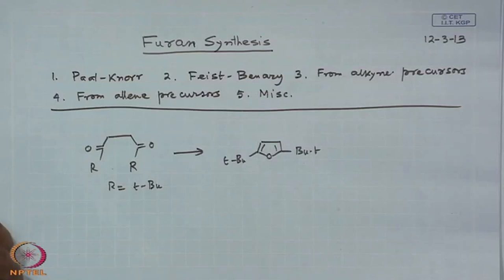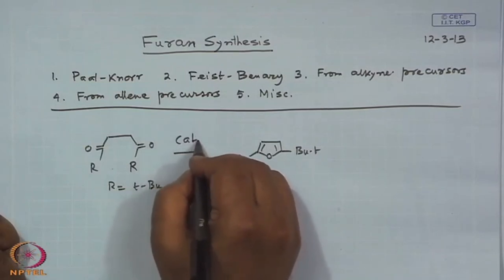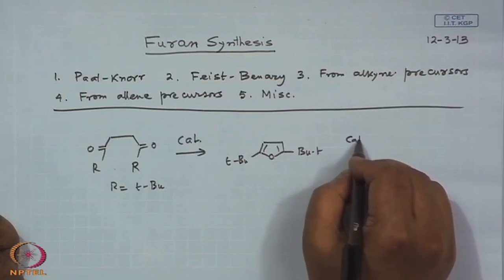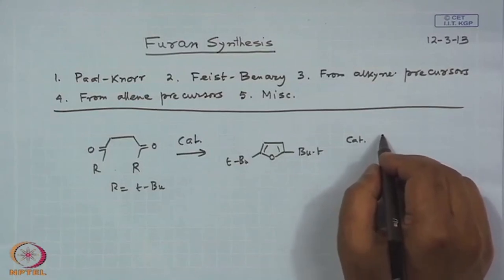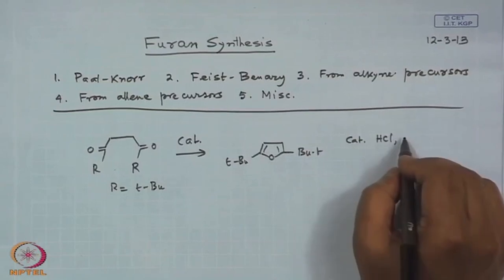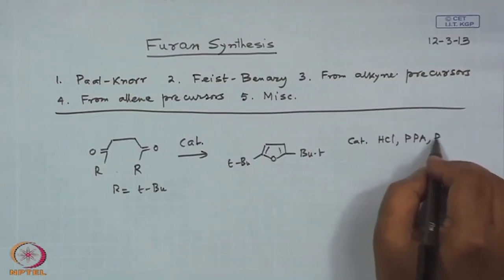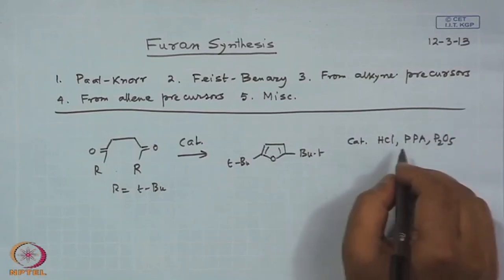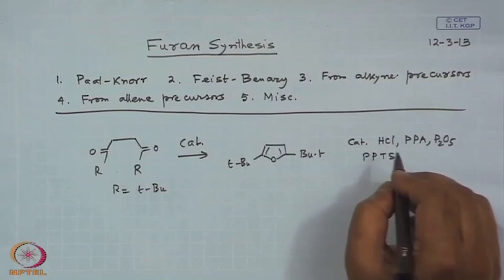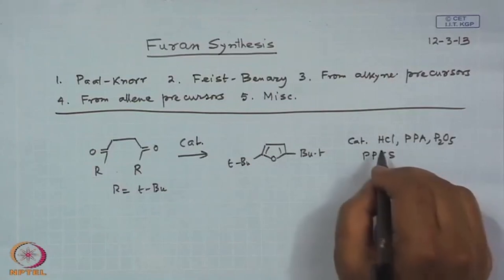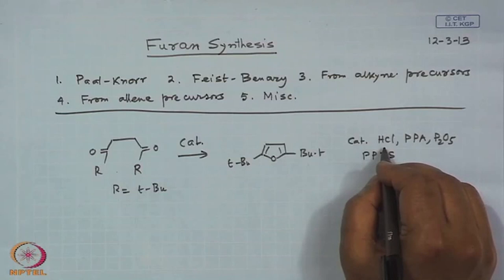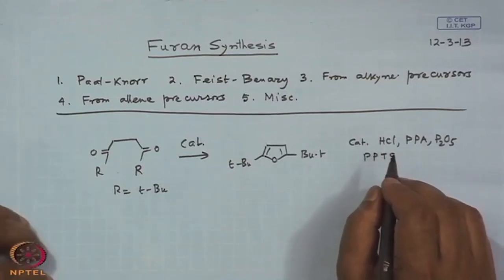For example, if R is tertiary butyl, you will get the corresponding furan derivative with tertiary butyl as the end product. You also have to know the catalyst. You cannot use a very strong catalyst; you have to have a mild catalyst — an acid catalyst. You can use HCl, PPA, phosphorus pentoxide, or PPTS. PPTS is pyridinium para-toluenesulfonate.